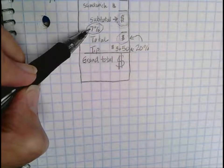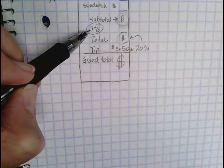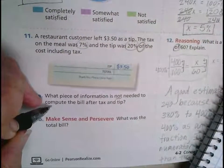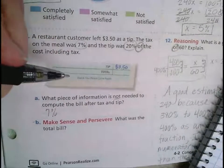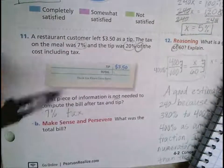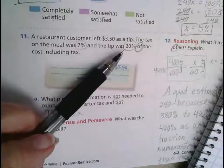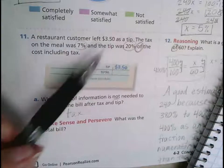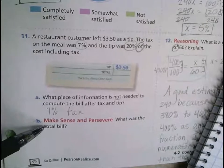So the piece of information I really don't need to know is what the sales tax was. But they told us, and that's okay. So the answer is the 7% tax is what I really am not going to be using to solve my problem. I'm going to be using the fact that my tip was 20% of the bill.